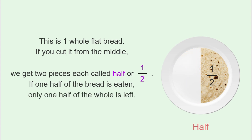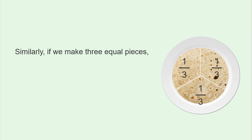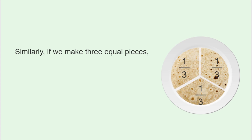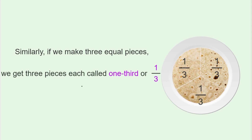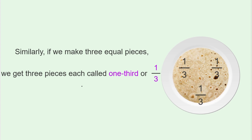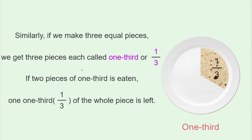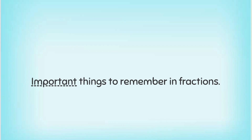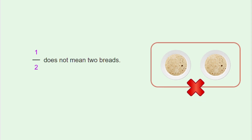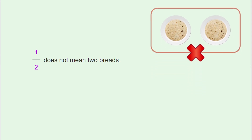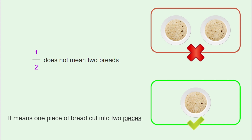Similarly, if we make three equal pieces, we get three pieces, each called one third, or one by three. If two pieces of one third are eaten, one one-third of the whole piece is left. Important things to remember in fractions: one by two does not mean two breads — it means one piece of bread cut into two pieces.